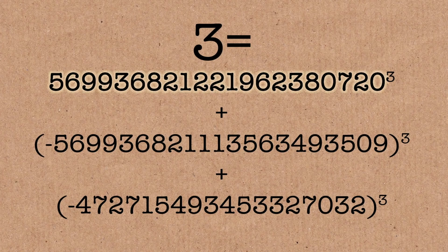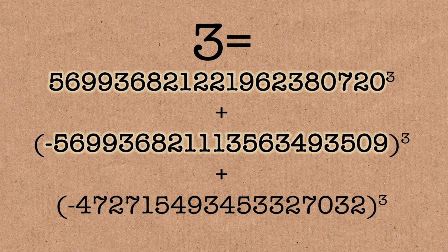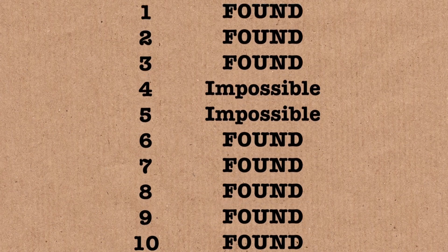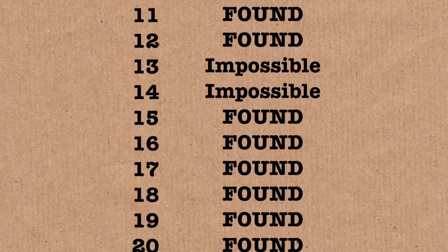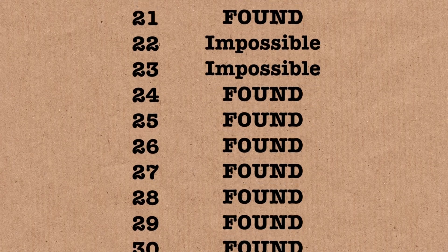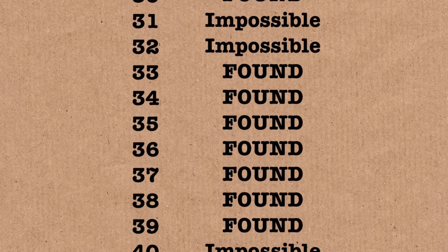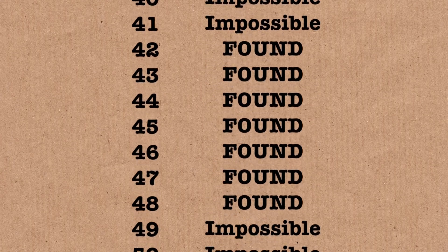And it has a couple numbers with 21 digits. Two of them have 21 digits and the other one has 18. We should point out there are some numbers that can never be found. So if your number, if you divide it by 9 and you get a remainder of 4 or 5, then we know you can't do it.